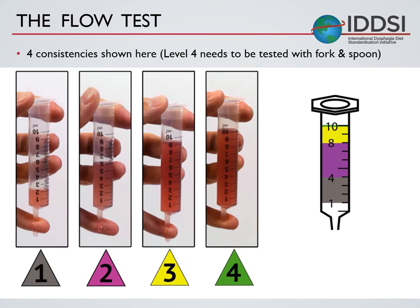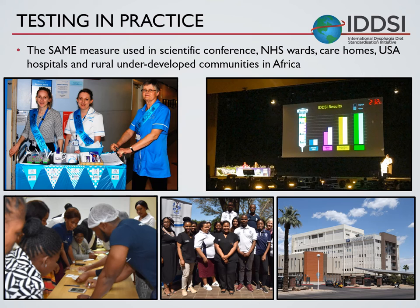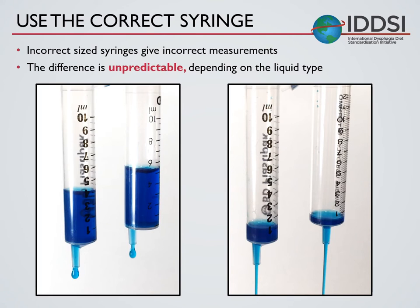For level 4 there is no flow, and we would recommend that you test level 4 with a fork and spoon test. Using this straightforward but accurate measurement means it's the same measure which gets used and reported in scientific conferences and journals, in the NHS in the UK, in hospitals and care homes, and everywhere from the best-funded North American hospitals to rural underdeveloped communities in Africa. It's important to use the same dimensions of syringe as published on the IDDSI website. If you use a different sized syringe, you'll get a different measurement, and that difference can be unpredictable depending on the type of liquid used.